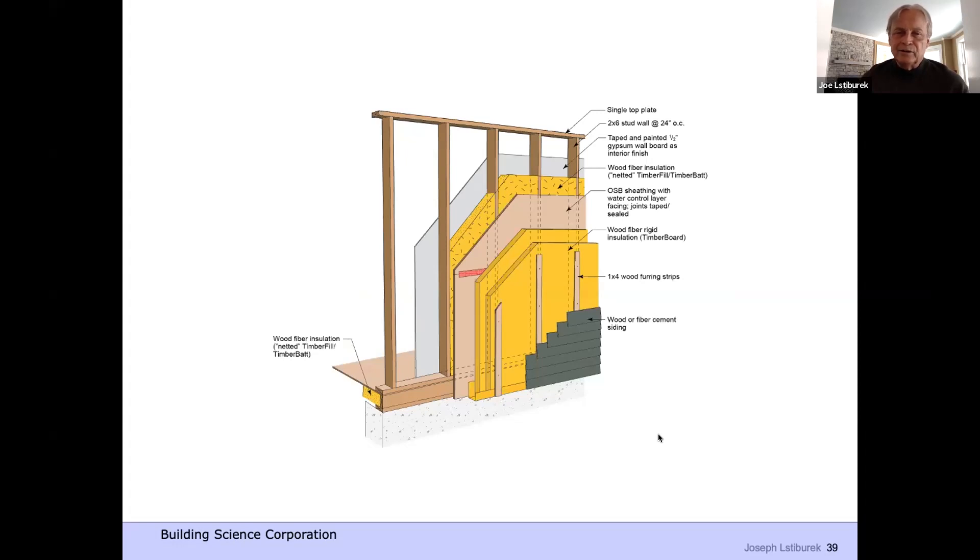I'm going to put OSB on the outside for structural reasons, and it's also going to provide my vapor throttle, even though I might not need it. And I put two layers of rigid insulation on the outside, giving me 4 inches, 1x4 wood furring with a wood screw, and whatever cladding system I want, and I'm good to go. Gypsum board on the inside. And so I've got a vapor throttle in the plywood or OSB, but the wall can dry in both directions.